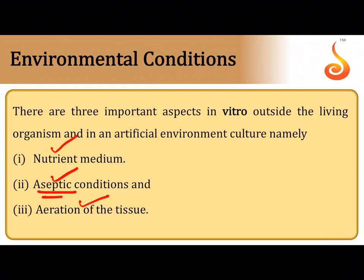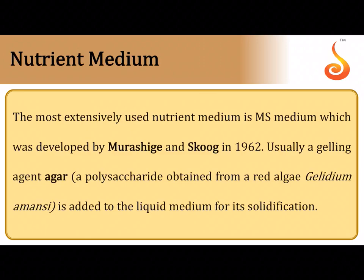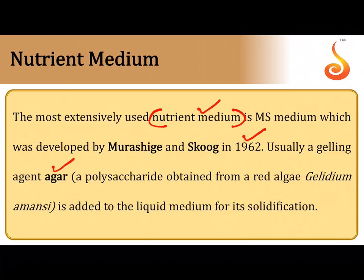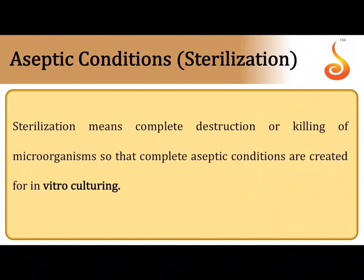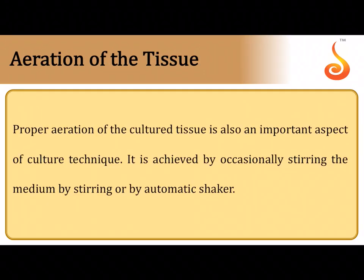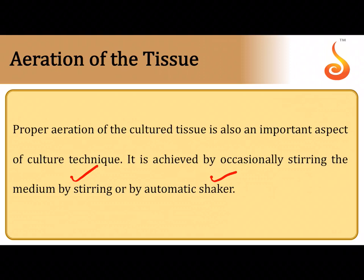Three important requirements for tissue culture are: a suitable nutrient medium, completely aseptic conditions to prevent bacterial or fungal contamination, and adequate oxygen supply. The most extensively used nutrient medium is MS (Murashige and Skoog) medium (1962), solidified with the gelling agent agar-agar extracted from seaweeds. Aseptic conditions are strictly maintained for in vitro culturing, and the medium is constantly stirred by an automatic shaker to dissolve sufficient oxygen for aerobic respiration of plant cells.